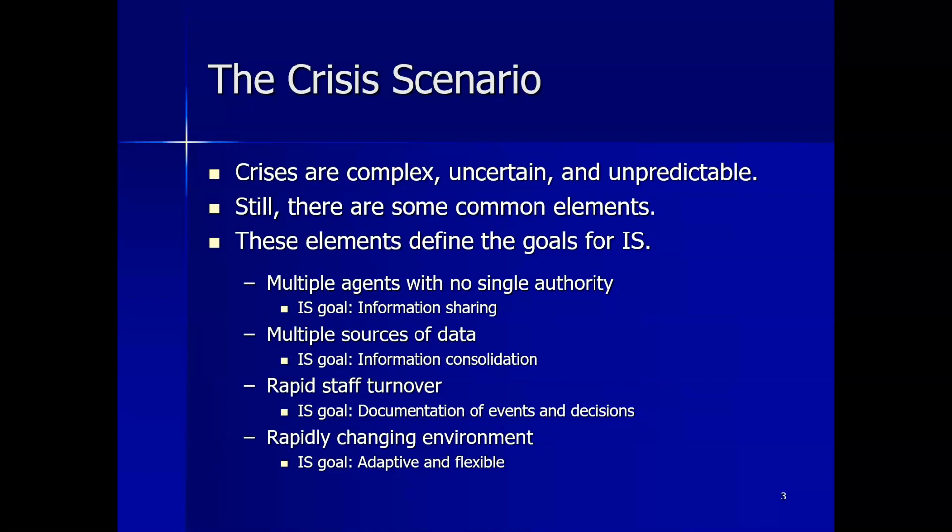While no two emergency situations are alike, when disasters strike, the ability to share and communicate accurate and timely information is most often a key goal in response and recovery efforts. This chapter highlights why a typical emergency scenario creates such a dire need for the ability to effectively manage information. The atmosphere during a crisis situation is typically very complex and uncertain, and although we can never predict exactly how events will unfold, there are a number of elements that are common among crisis scenarios.